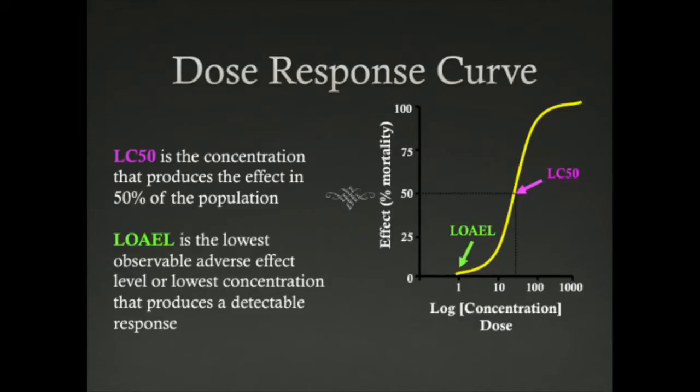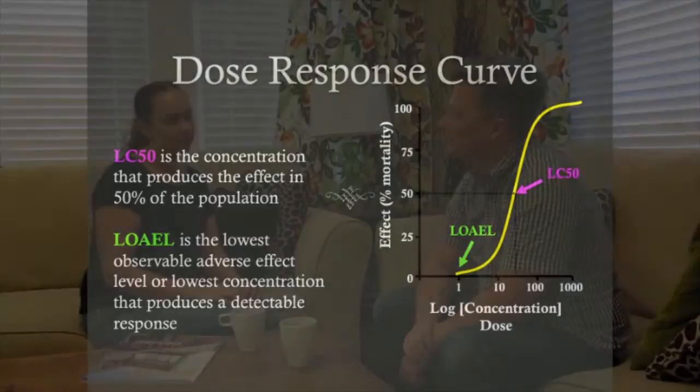The curve begins at the point on the graph that is the lowest observable adverse effect, or the lowest concentration that produces a response from an organism.